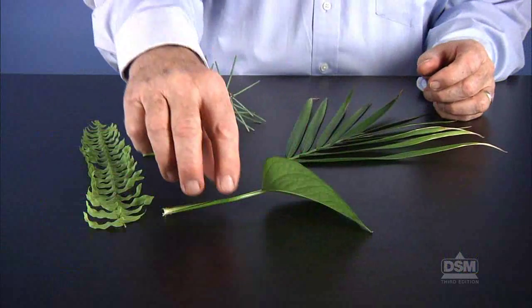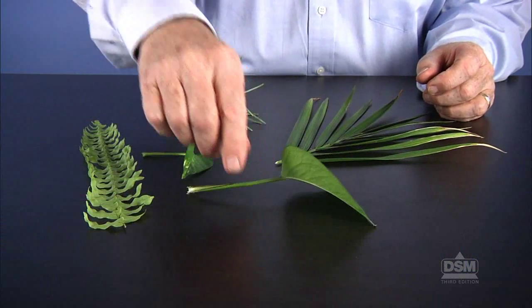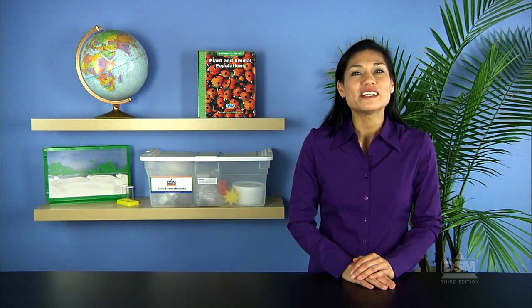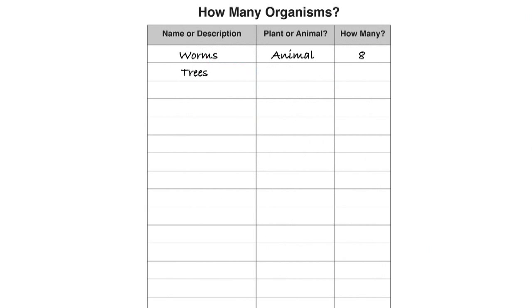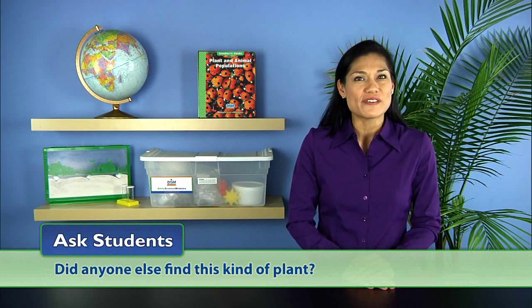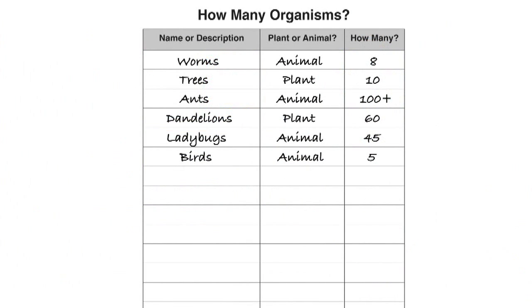Have students bring in sample leaves of unknown plants to compare with leaves other teams collect. Next, return to the classroom and fill in the How Many Organisms chart as a class, listing the plants and animals and the number of each they found. As teams name, describe, or show leaves they found, ask the class, did anyone else find this kind of plant? Add together each team's count to get the total number of each kind of plant. Repeat this process for the other plants and animals students have counted until you have a complete inventory on the chart.